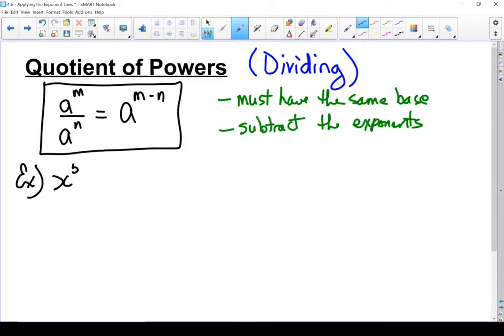Let's do an example. So here I've got x to the power of 5 divided by x to the power of 3. I've got the same base, so my quotient of powers law applies. So my base is x, and I'm going to subtract those two exponents. 5 minus 3, so my end answer equals x to the power of 2.